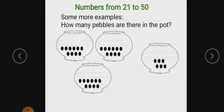Now how many pebbles are there in the pot? See children, these pots contain pebbles. Each pot contains 10 pebbles. Let's count: 1, 2, 3, 4, 5, 6, 7, 8, 9, 10. So these 3 pots contain 10 pebbles each. That means 30. It is 3 tens.